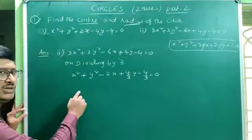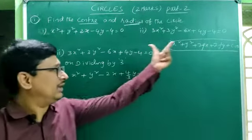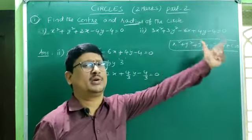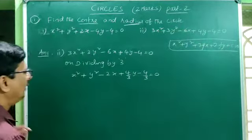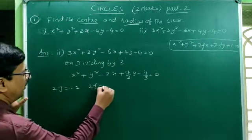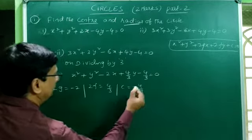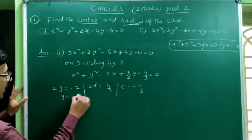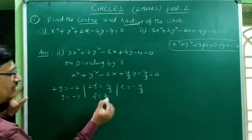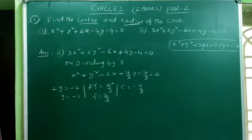Now we find the 2g, 2f, and c values. Comparing with the general form, 2g = −2 so g = −1. Similarly, 2f = 4/3 so f = 2/3. And c = −4/3.